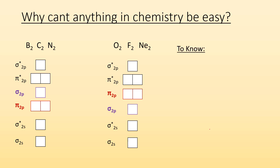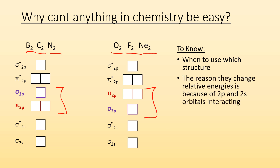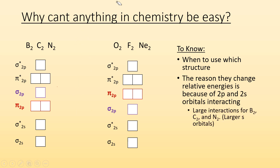Why can't anything in chemistry be easy? Let me boil it down: you need to know when to use each structure. For boron, carbon, and nitrogen, use the first structure. For oxygen, fluorine, and neon, use the second. The reason there's a difference is because the 2p and 2s orbitals interact with each other. The larger interactions are for boron, carbon, and nitrogen; the smaller interactions are for oxygen, fluorine, and neon. But the big takeaway is knowing when to use which structure.